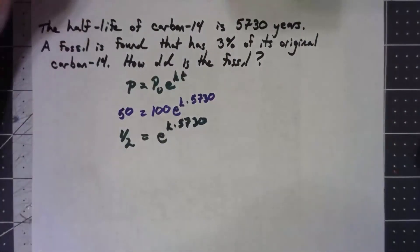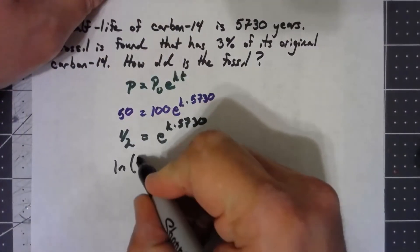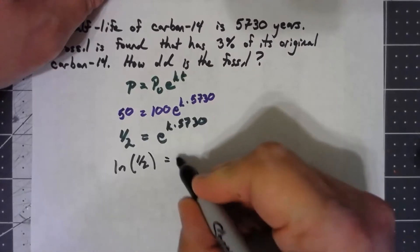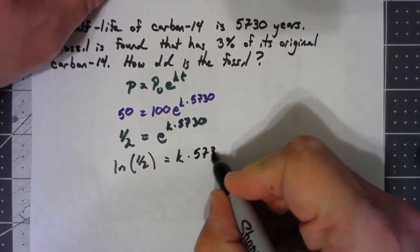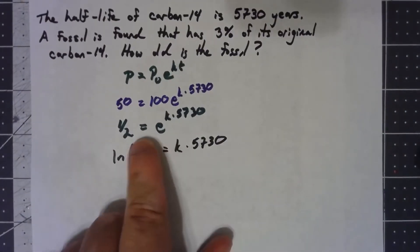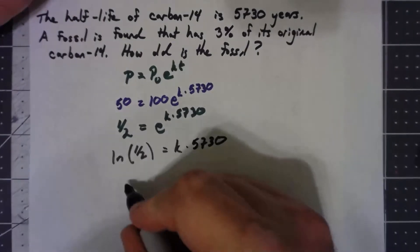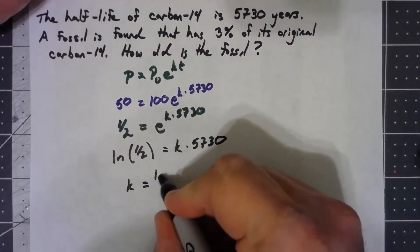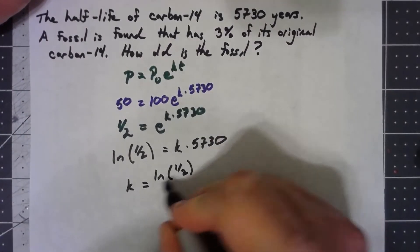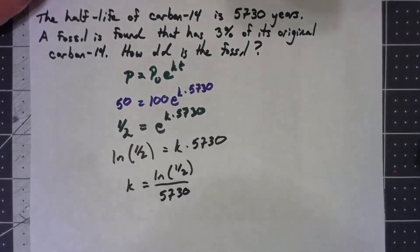I can then take the natural log of both sides. And once again, when you take the ln of e to a power, it cancels out. They are inverse functions, and so you're just left with the power. So my K is the ln of one-half over 5730.